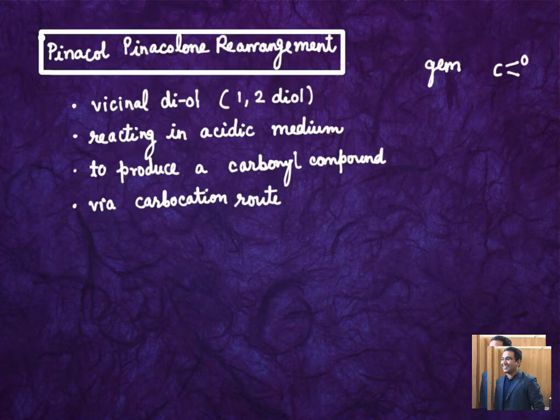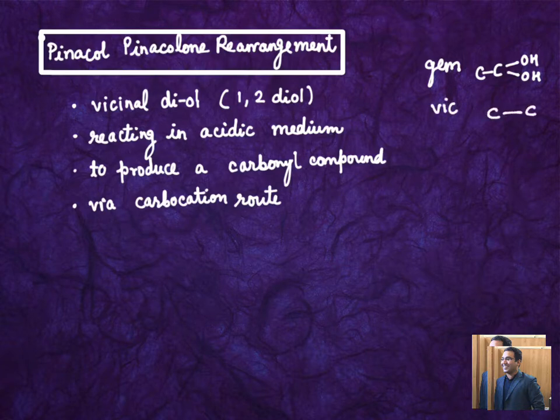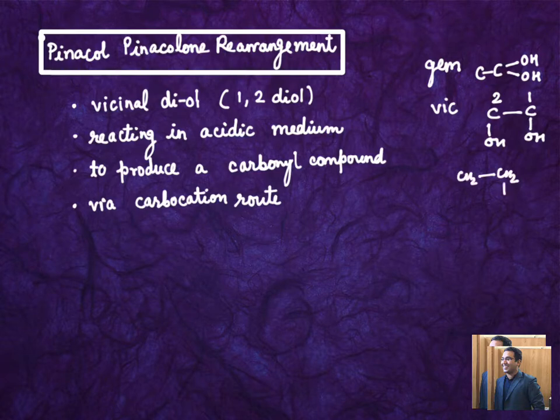Let's say geminal diol will carry both the OH on the same place, whereas if it is vicinal diol, it will carry OH on two different carbons which are next to each other. So there's another name to call it: 1,2-diol. Let me take one example for you. Let's say we talk about CH2OH-CH2OH. This could be considered as an example of vicinal diol because it's a 1,2-diol.